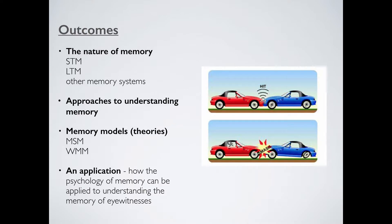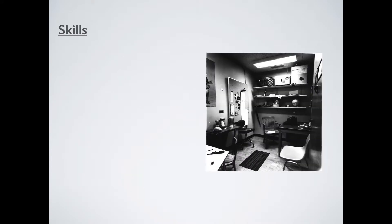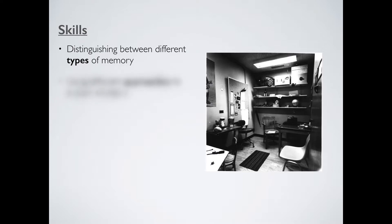Those outcomes are what you should have in your head going into the exam. In terms of skills, what kind of things should we be able to do? Well, you should be able to distinguish between different types of memory — that could mean short-term and long-term, or it could focus more on long-term, things like declarative memory, semantic memory, procedural — all those kinds of things. Second, you should be able to use the different approaches to explain memory. So how do we approach things biologically to explain memory and how does that compare and contrast, for example, to the cognitive model? You should be very comfortable doing that.